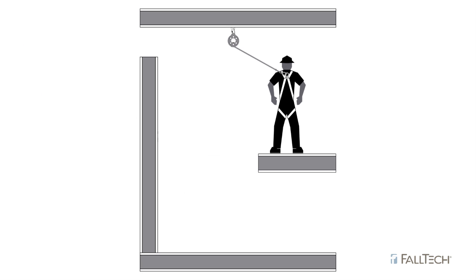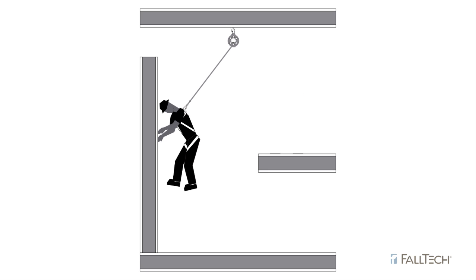Another consideration is swing fall. Swing fall occurs when the worker falls while not being directly beneath the overhead anchor point. This can cause the worker to swing into adjacent obstructions rather than dropping straight down.